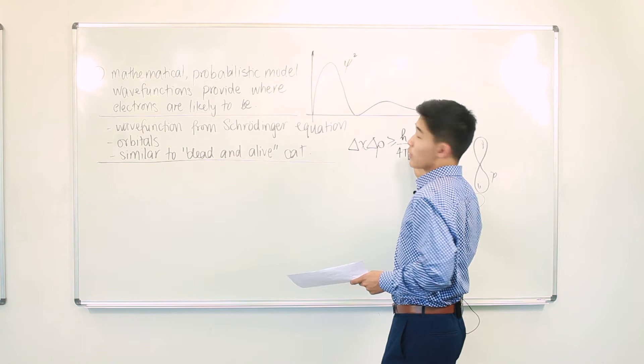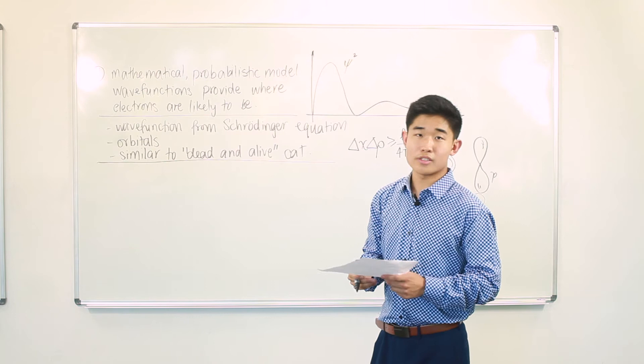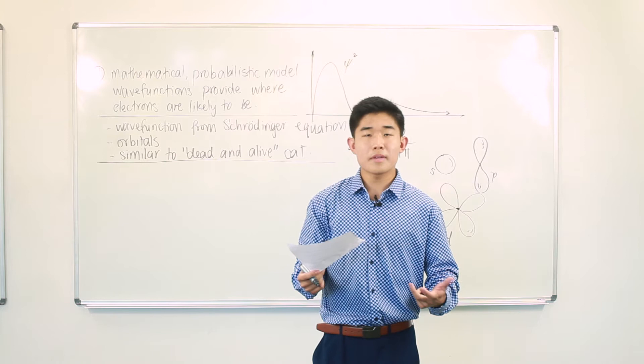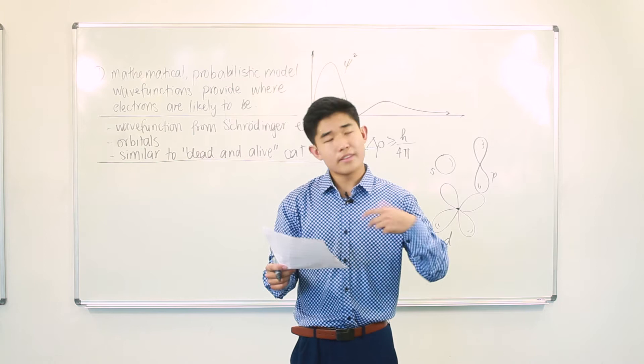So here we have that the momentum and position of an electron can never be determined simultaneously. And as we see, there is an error of h on 4pi, where h is Planck's constant. Furthermore, electrons behave with a wave-particle duality, which means they have wave properties like light, as well as particle properties. This can be seen through many different experiments in the past, such as Young's double-slit experiment. This can be thought of as the cat being alive and dead.